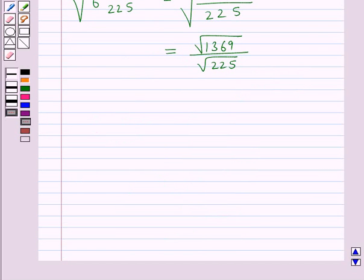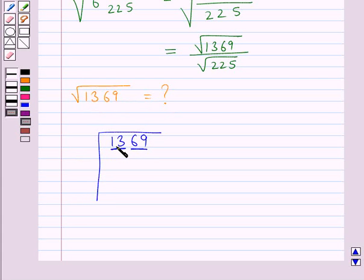We find the square root of 1369 and 225 separately. First, we find the square root of 1369 by the long division method. We make the pairs. 3 times 3 is 9. We subtract this 9 from 13 to get 4. We take down this pair, 69.